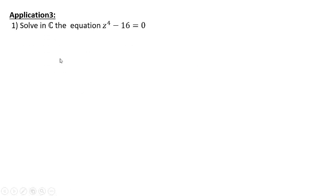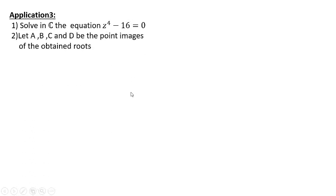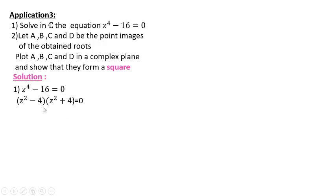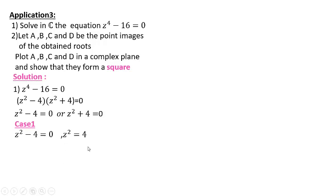Application number 3: solving in C the equation z⁴ − 16 = 0. Before solving, note this is a 4th-degree equation, so it should admit 4 roots in C. Apply the identity: (a² − b)(a² + b) = 0. The product equals zero, so the first factor equals zero or the second equals zero. From z² − 4 = 0: z² = 4, giving z = ±2.